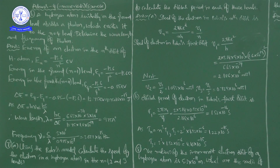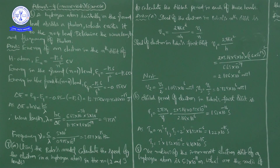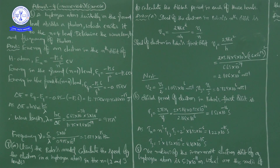When the electron gains energy, it goes from a low energy level to a high energy level. For example, if the electron is in level 1 (n=1) and gains energy, it goes to n=2. From n=2, if it gains more energy, it goes to n=3, and so on. Conversely, when the electron loses energy, it comes down — from the 4th level to the 3rd level, then 2nd level, then 1st level.